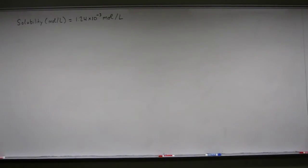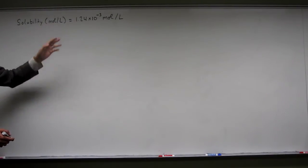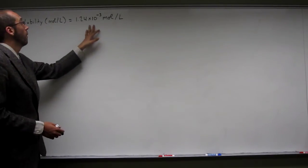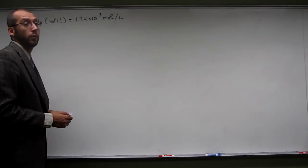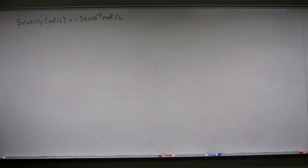This first solubility question says if the molar solubility of calcium fluoride at 35 degrees Celsius is 1.24 times 10 to the negative third moles per liter, what is the Ksp of calcium fluoride at this temperature? So we have the molar solubility written here. Remember, molar solubility is moles per liter just like molarity, and it's 1.24 times 10 to the negative third, which was given to us in the problem.